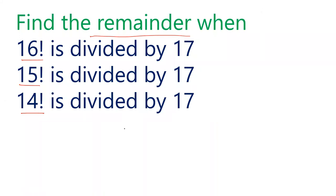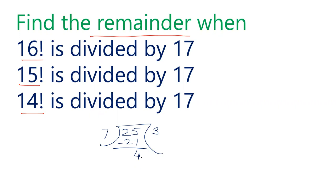Let's understand the meaning of remainder first. Any number — for example 25 — let's say we divide by 7. So 7 threes are 21, the integral multiple is 21 and the leftover is 4. When we subtract 25 and 21, we get 4. This 4 is known as the remainder. So remainder is obtained when we divide by a certain number — the integral multiple — and the leftover is the remainder.